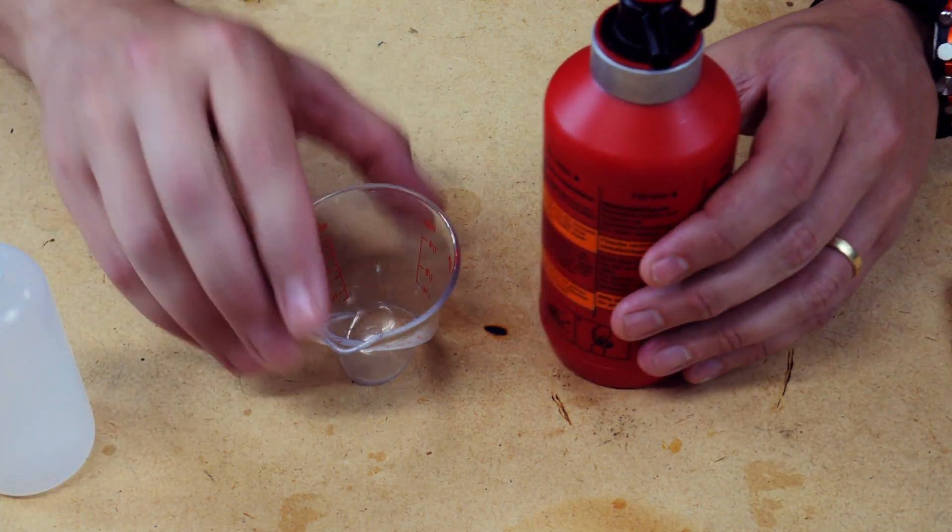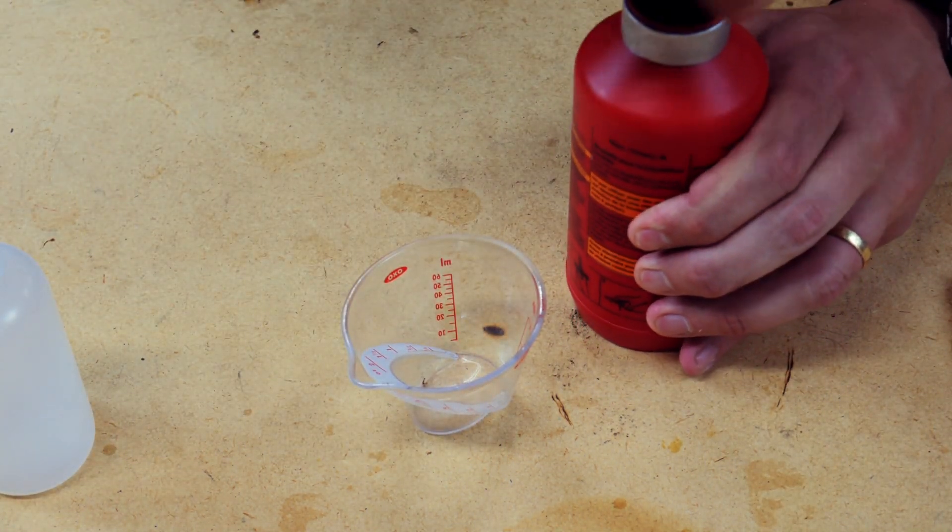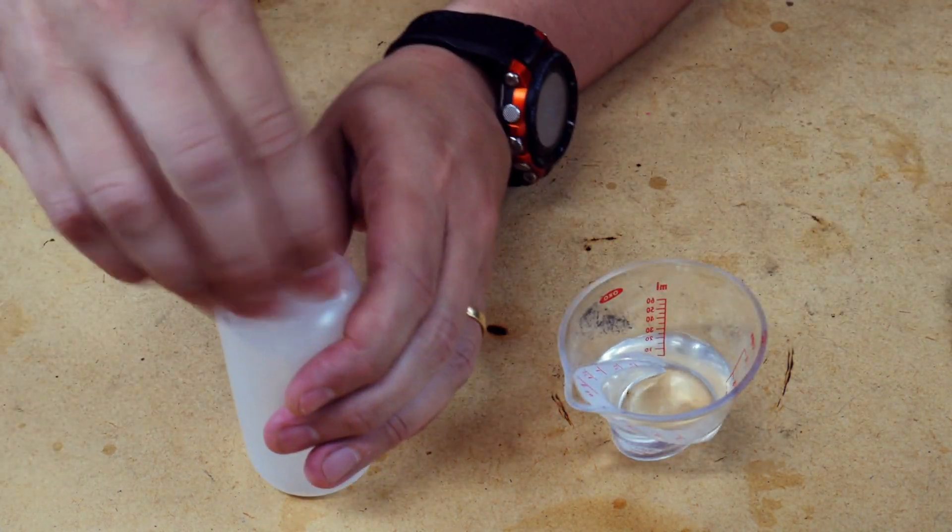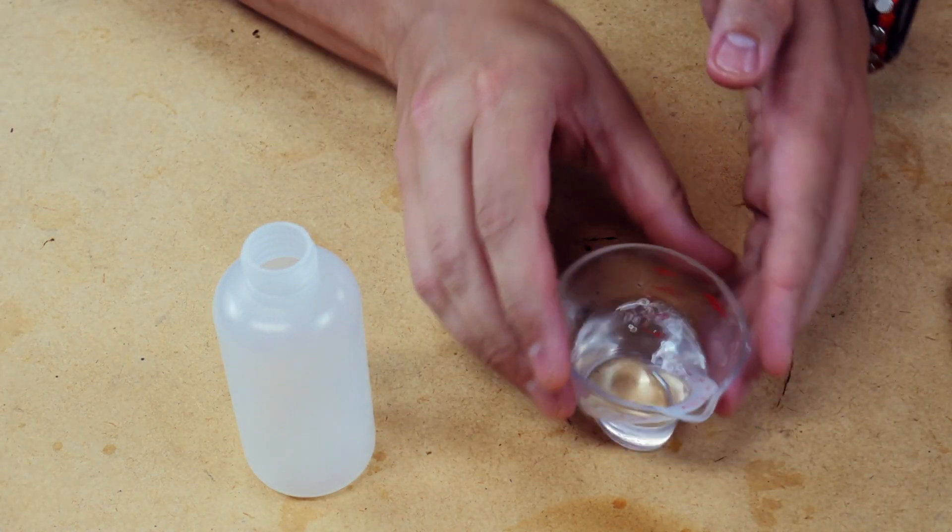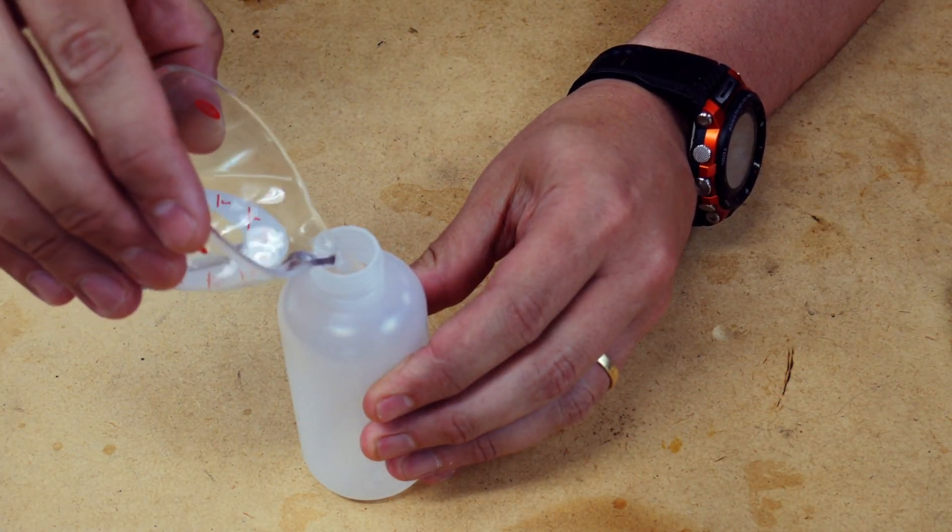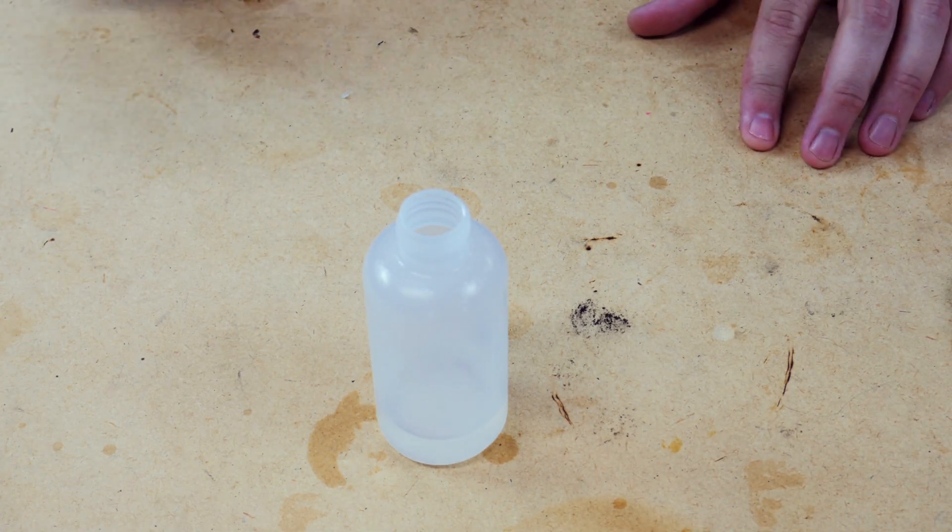So the first thing we're going to do is we're going to take this alcohol, and we're going to measure out one ounce of alcohol. And there you go. Next thing we'll do is get our fuel bottle, and we'll pour in that one ounce of alcohol. Now let me get you all a little closer so you can see what we're going to do next.